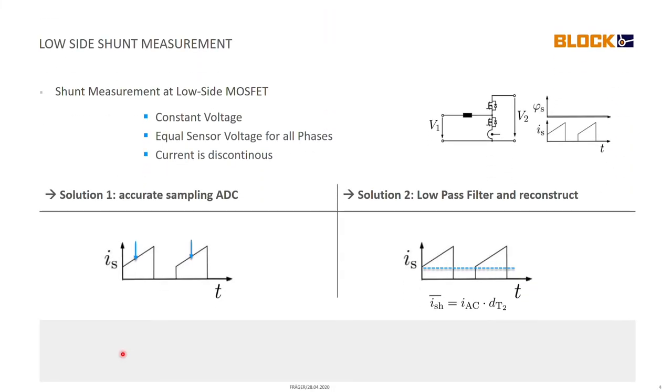This is the concept that I want to present to you today: to do the shunt measurement at the low side MOSFET of a half-bridge circuit. An inverter pretty much consists of three half-bridge cells so it makes sense to first of all look at the shunt or the current measurement for one half-bridge of this inverter.